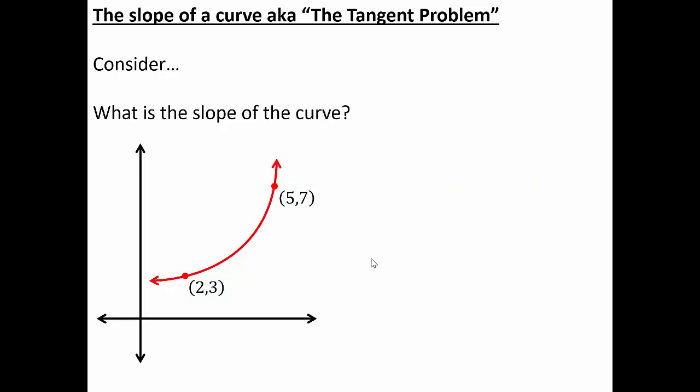Now, what is the slope of a curve? We have the same two coordinates, 2,3 and 5,7, but now I'm asking for the slope of the curve. This is where in the history of mathematics we get a hard stop. The word 'slope' is actually defined as the steepness of a line, so asking for the slope of a curve makes no sense. What I'm actually asking is: what is the slope at a specific point on the curve? And that depends on which point you pick.